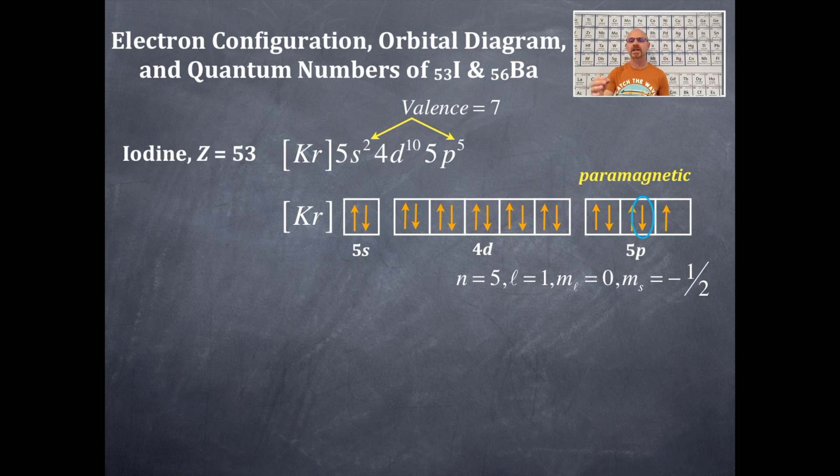The n is 5 because it's in 5p. The l is 1 because it's a p-type orbital. And if I label these boxes with the middle box as a 0, to the right would be a 1, to the left would be a negative 1. It's in the middle box, that's m sub l of 0. And this is a downward facing electron that's negative, that's why it's negative 1 half for the m sub s. Hopefully that worked out well for you.